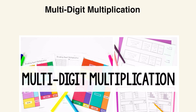Hey everyone, welcome back to Youth Tutors, where learning is fun, clear, and made just for you. In today's video, we're diving into multiple-digit multiplication, focusing on how to multiply two-digit numbers by two-digit numbers, like 24 times 36. That might sound tricky at first, but don't worry — we'll break it down step by step so it's easy to understand.